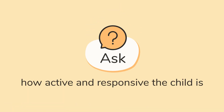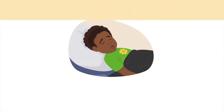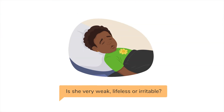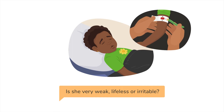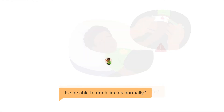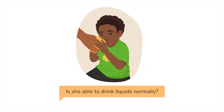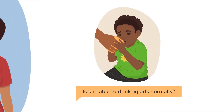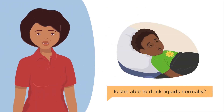Number three: ask how active and responsive the child is. You can ask: is she very weak, lifeless or irritable? Any of these signs can suggest severe malnutrition, which is a danger sign. Is she able to drink liquids normally? If the child cannot drink enough to stay hydrated, it can be a severe sign.